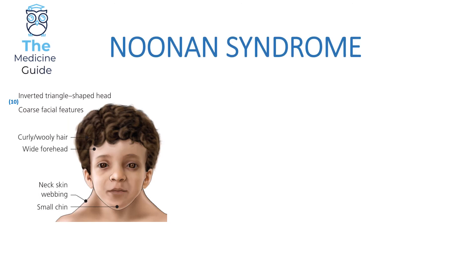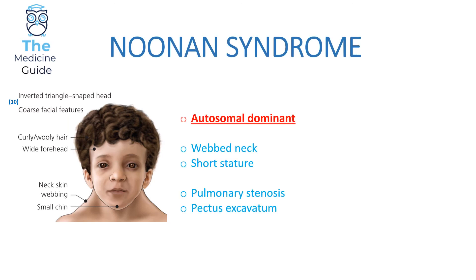Noonan syndrome is an autosomal dominant condition. Patients will have a webbed neck — a coarse angle between the neck and shoulders as seen in the diagram — short stature, pulmonary stenosis, and pectus excavatum on their chest. These are the key features to help you pick the correct answer in your SBA.